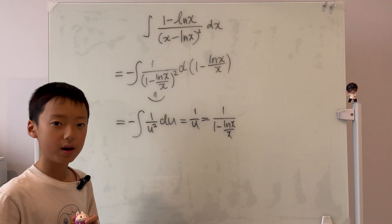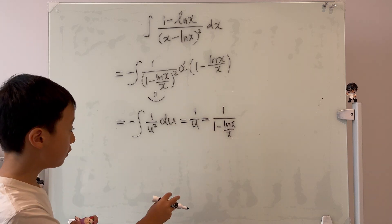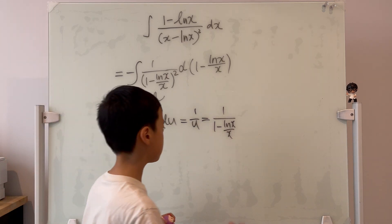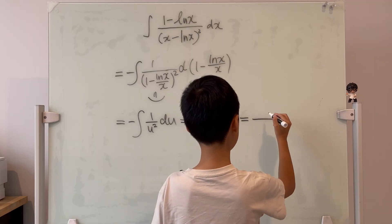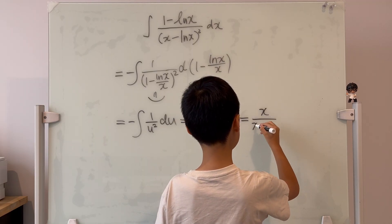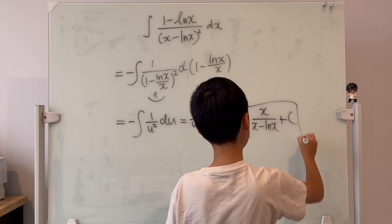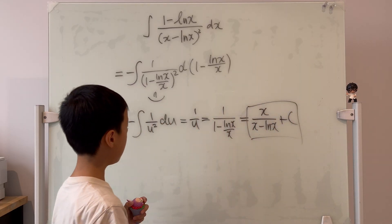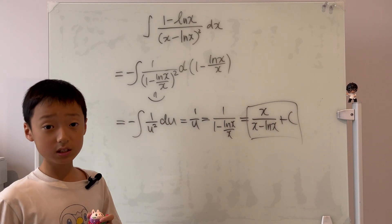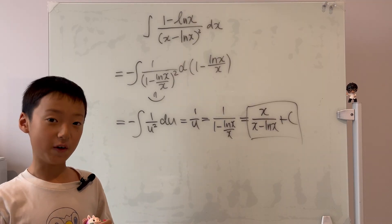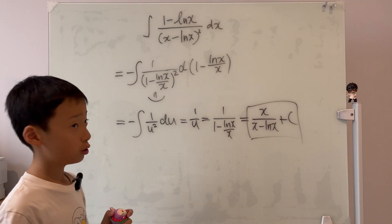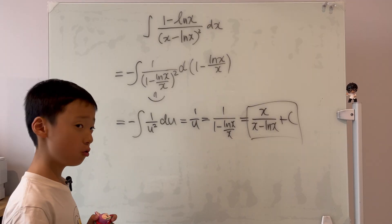But right now, our smiley face is too ugly. Why don't we multiply the top and bottom by x? So it's equal to x over x minus ln x. So don't forget the plus c. And this is the answer. So this is the final answer. So these are the final answers of the two questions that I have given you.